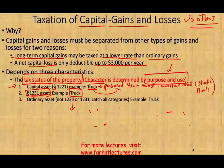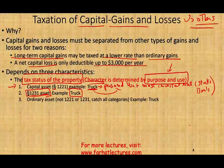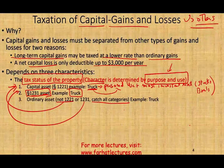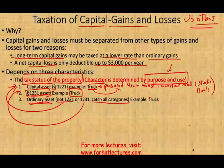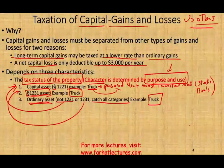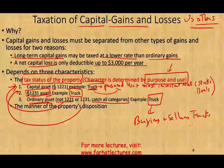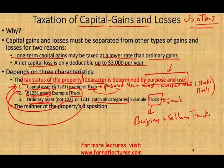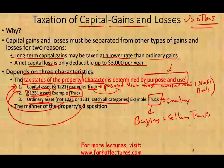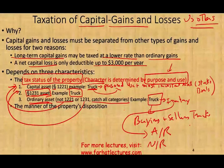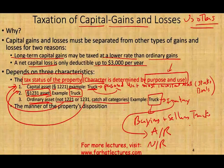An ordinary asset is a catch-all category. If the asset is not a capital asset and not a section 1231 asset, then it is an ordinary asset. For example, if you are in the business of buying and selling trucks like a dealership, the truck is considered inventory, and inventory is an ordinary asset. When you sell inventory on account, you may have an account receivable or notes receivable — those are also ordinary assets.